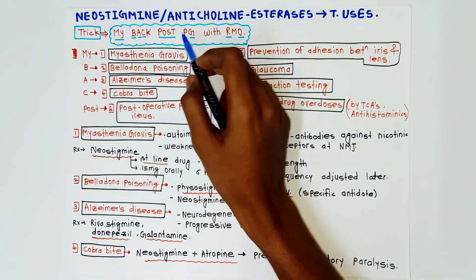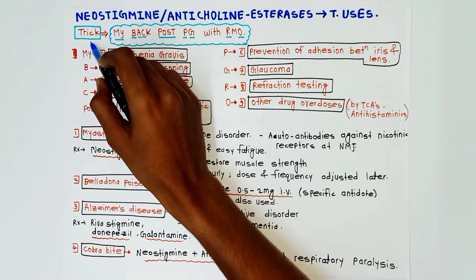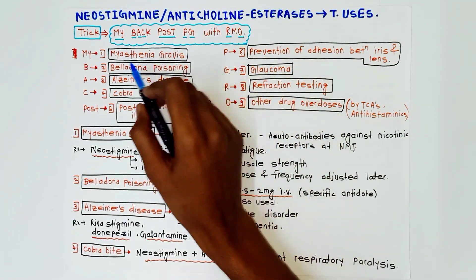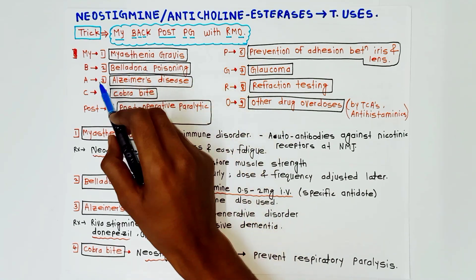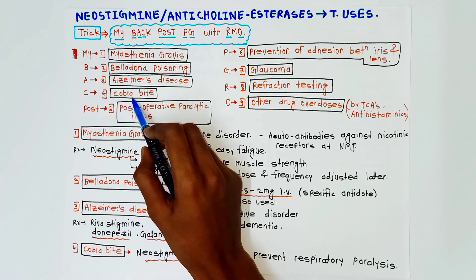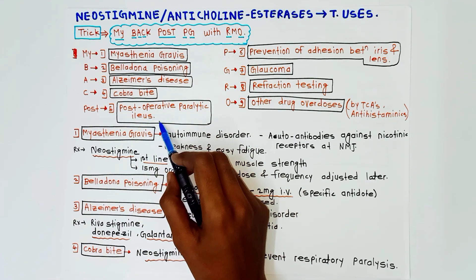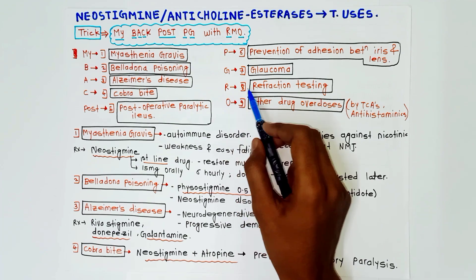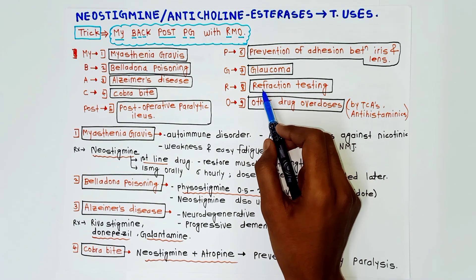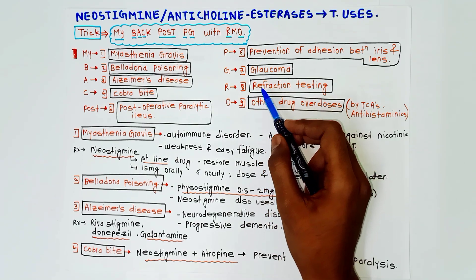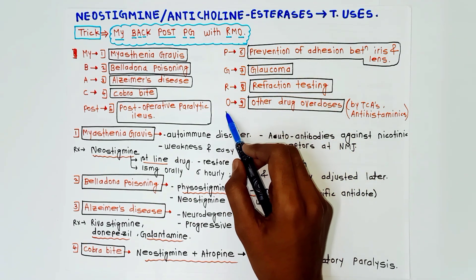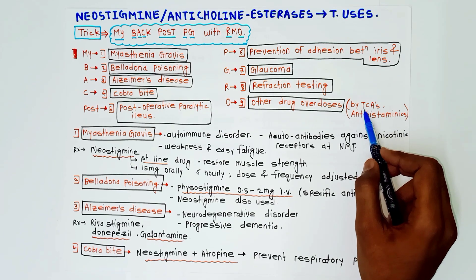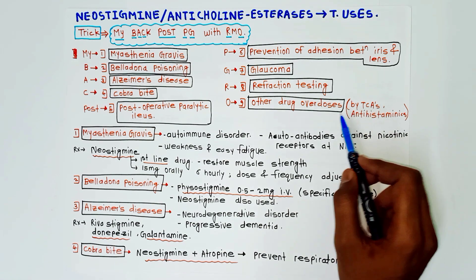The trick to remember the therapeutic uses is the mnemonic 'My Back Post PG with RMO.' M for myasthenia gravis, B for belladonna poisoning, A for Alzheimer's disease, C for cobra bite, Post for post-operative paralytic ileus, P for prevention of adhesion between iris and lens, G for glaucoma, R for after refraction testing, and O for other drug overdoses like TCAs (tricyclic antidepressants) and antihistamines.